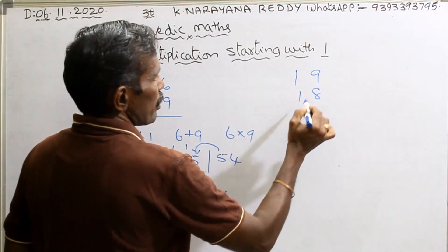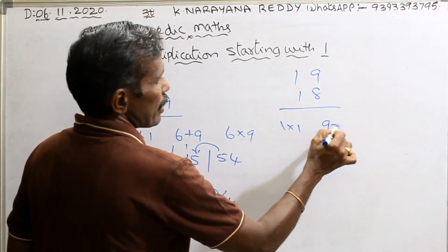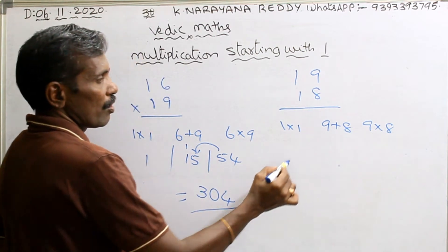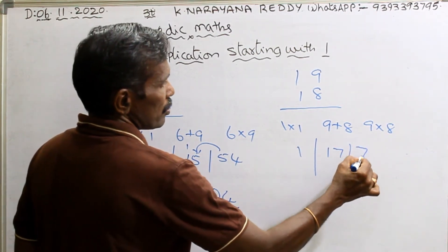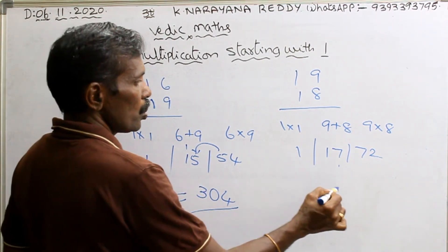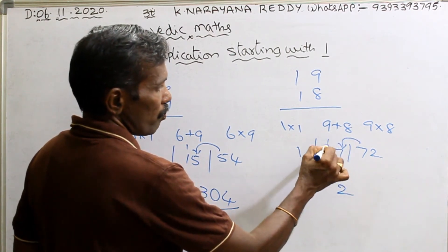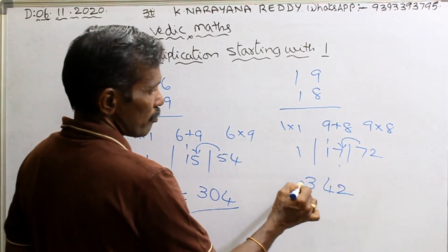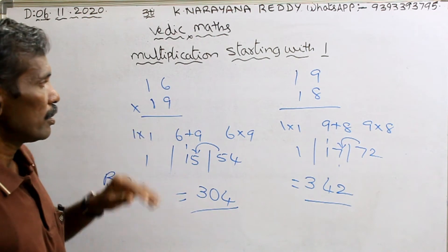Next, take another number: 19 into 18. For 19 into 18: 1, then 17, then 72. Now same balancing rule — take 2, then 7 plus 7 is 14, then 1 plus 1 is 2, 2 plus 1 is 3. That's all — answer is 342. This is the method.